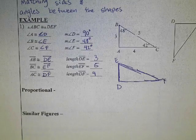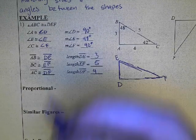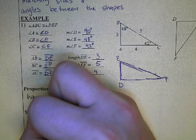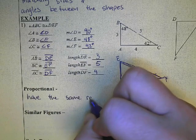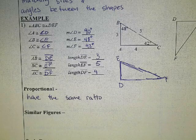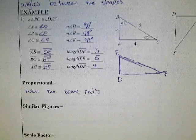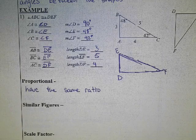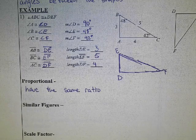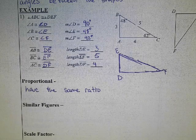When shapes are proportional, we say that they have the same ratio. Similar figures have the same shape, but not the same size.